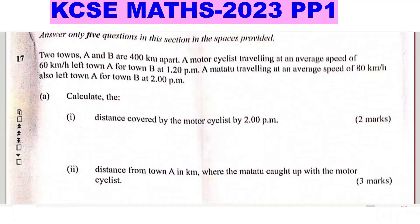Question 17: Two towns A and B are 400 kilometers apart. A motorcyclist traveling at an average speed of 60 kilometers per hour left A for B at 1:20 PM. A matatu traveling at an average speed of 80 kilometers per hour also left town A for B at 2 PM. Part (a): Calculate the distance covered by the motorcyclist by 2 PM.